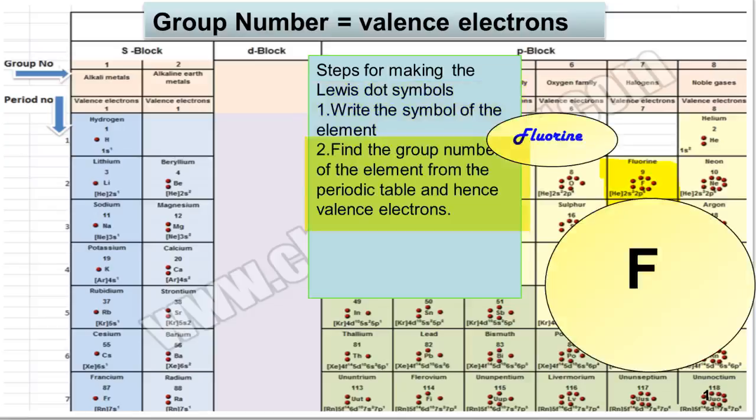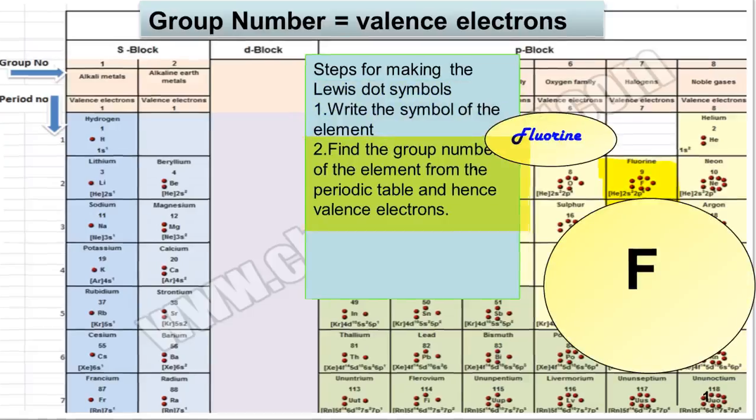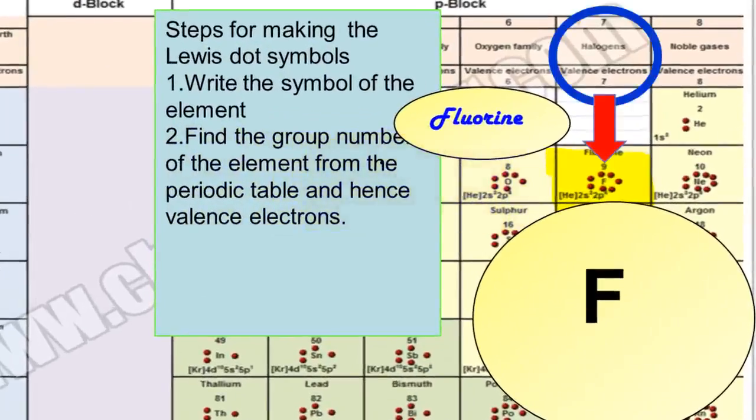The second step is to find the group number of the element in the periodic table. Fluorine is in the seventh group. This will help us in predicting its valence electrons.